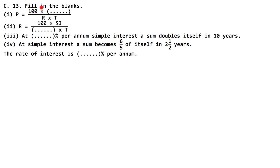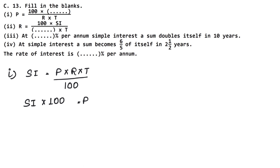Now this question says fill in the blanks. P = 100 × dash / (r × t). Since P, r and t appear in the simple interest formula — SI = P×r×t/100 — if we isolate P, simple interest goes to the numerator multiplied by 100, while rate and time go to the denominator. So the blank is simple interest (SI).